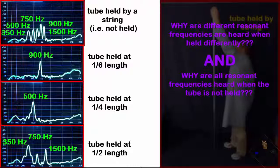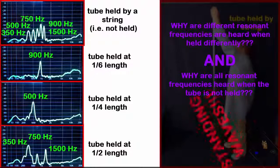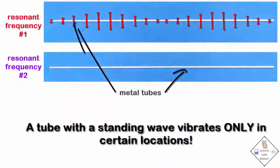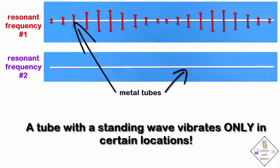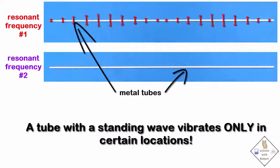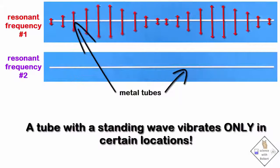A standing wave is a wave that is fixed in place in the object. A standing wave exists in the tube when fixed locations on the tube vibrate, and other fixed locations do not vibrate at all.